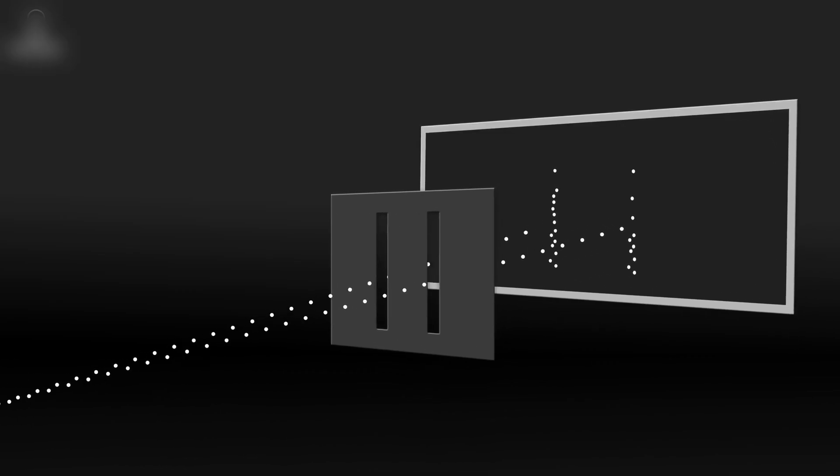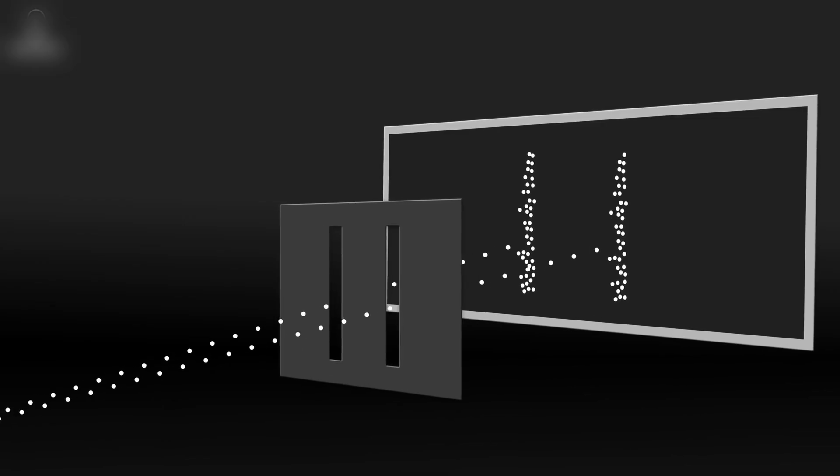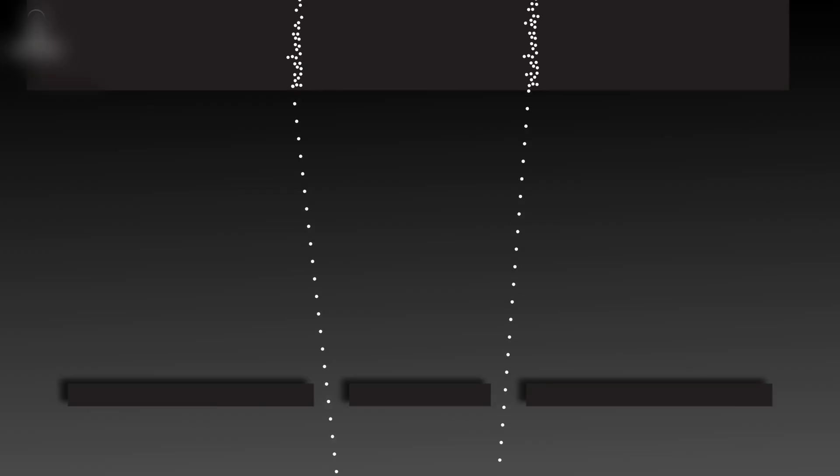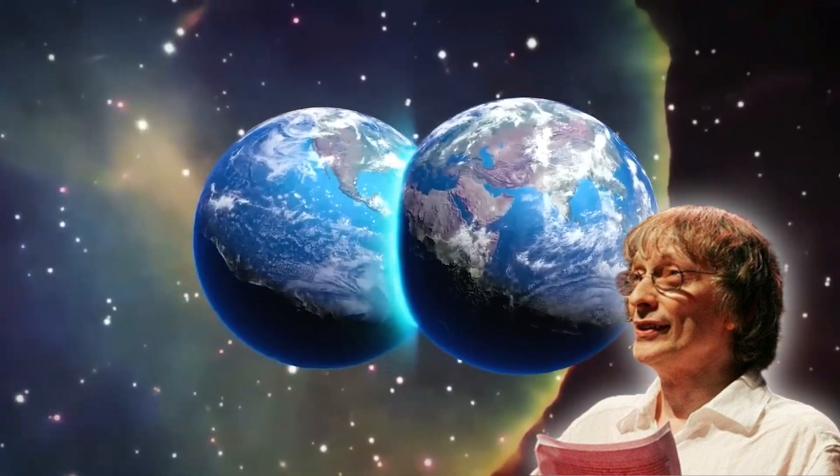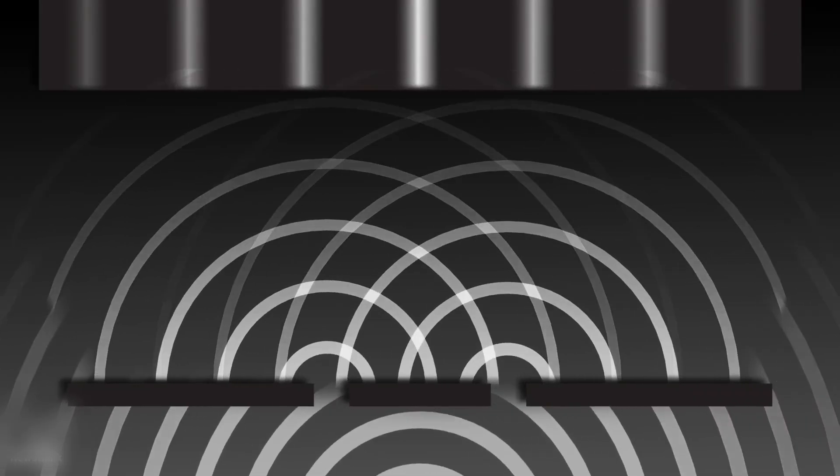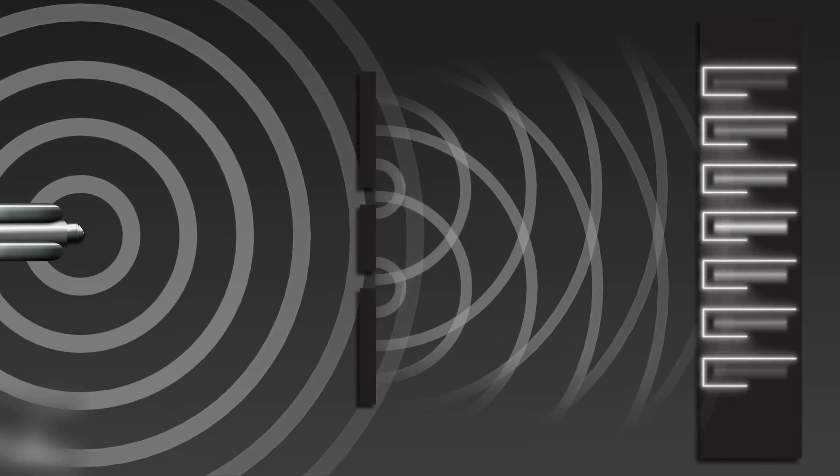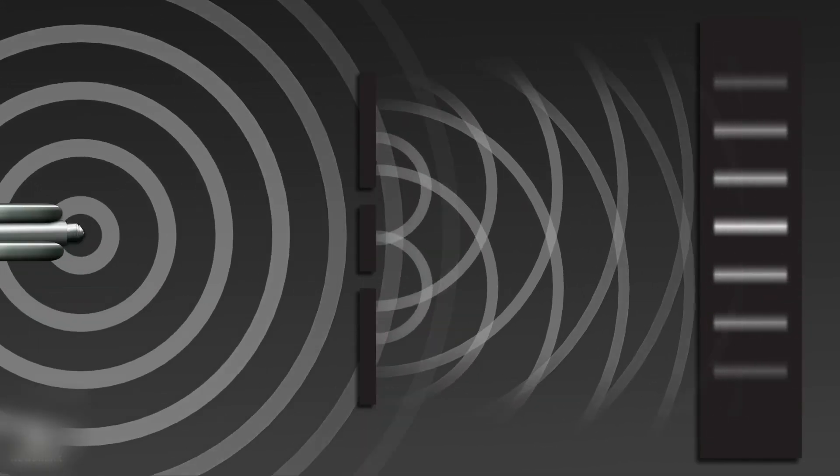The double-slit experiment provides compelling evidence for this interpretation. When scientists fire single photons through two slits, they create an interference pattern that can only be explained if each photon somehow travels through both slits simultaneously. Deutsch argues this happens because photons in parallel universes are interfering with each other. Even more remarkably, when scientists place detectors at the slits to determine which path each photon takes, the interference pattern disappears.